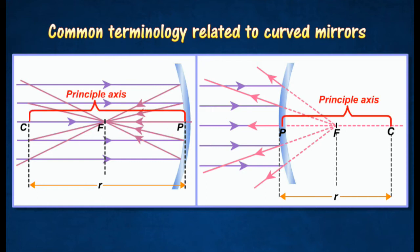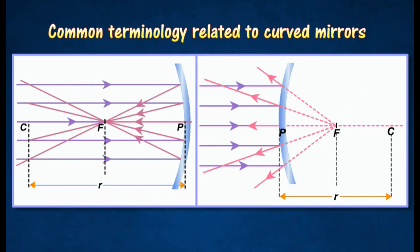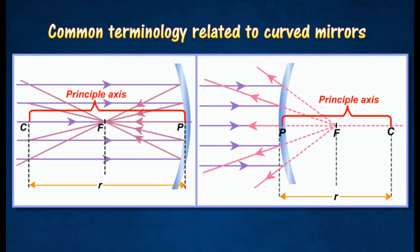The principal axis is the straight line passing through the center of curvature, C, and the pole, P, of the mirror.